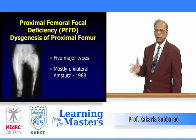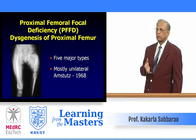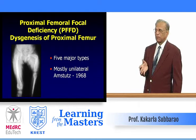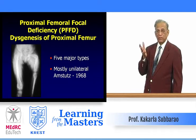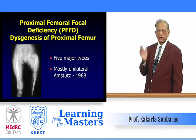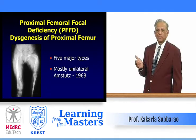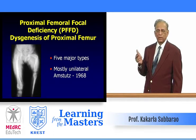Then comes the important entity called proximal femoral focal deficiency, or PFFD. This is dysgenesis of the proximal femur — a developmental condition. There are five major types described; it is mostly unilateral. First described by Amstutz in 1968, several forms have been described since. Early detection and diagnosis is important for orthopedic correction.